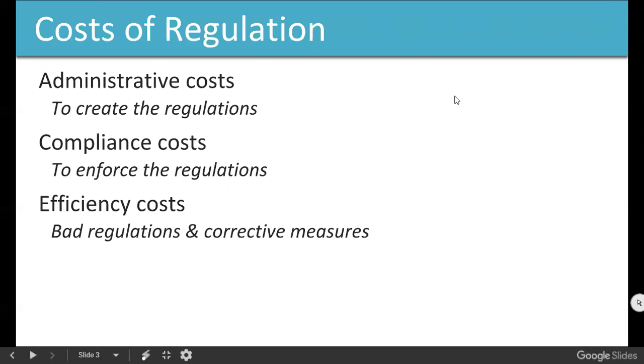When the government sets rules for the monopolies, or for any company, even for us, like speed limits, whatever law the government passes, it costs us as a society three different ways. Number one is the administrative costs. The costs are then to make the rules in the first place.